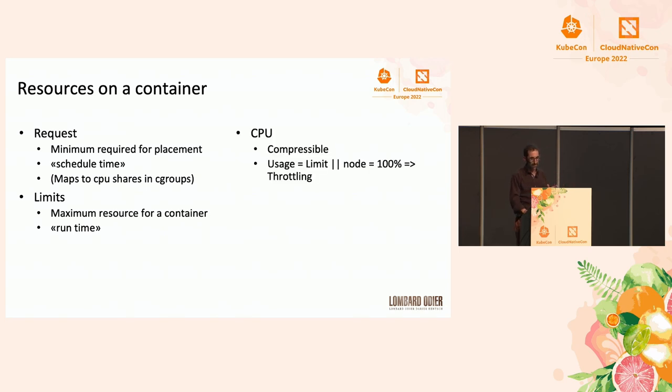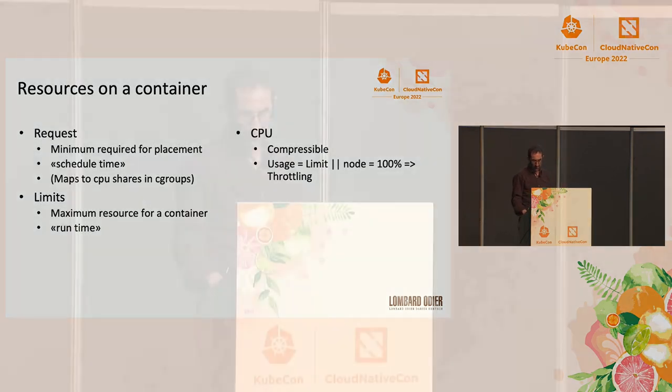In terms of resource types, CPU is a compressible resource. When usage reaches the limit or the node reaches 100% capacity, the pod is going to be slowed down — throttled, not crashed. Memory, however, is an incompressible resource. When usage reaches the limit you will get a pod out-of-memory kill and the pod will restart. Or if you use all the memory on your worker node, you get a memory pressure situation and the Kubernetes scheduler will start evicting pods and restarting them elsewhere to free up resources.